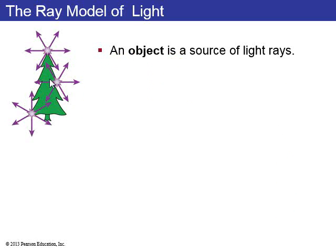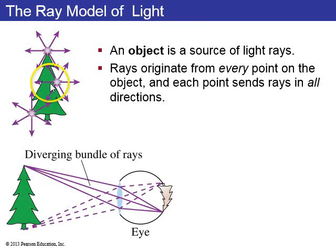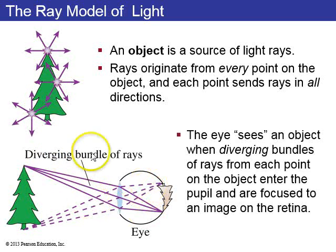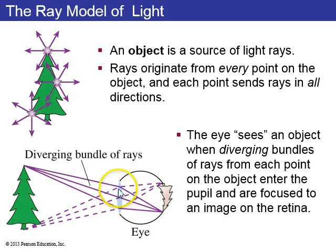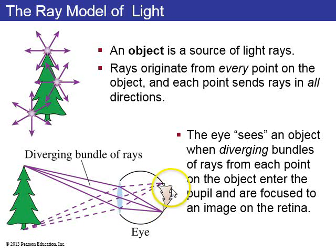An object is a source of light rays. Here's a Christmas tree — rays originate from every point on this tree and travel in all directions. To see an object, a diverging bundle of rays from, say, the top of the tree goes into the lens of your eye, and that diverging bundle converges to a point on the retina. This happens for every single point in the tree, so you end up with an upside-down image that your brain flips and interprets as seeing the tree.